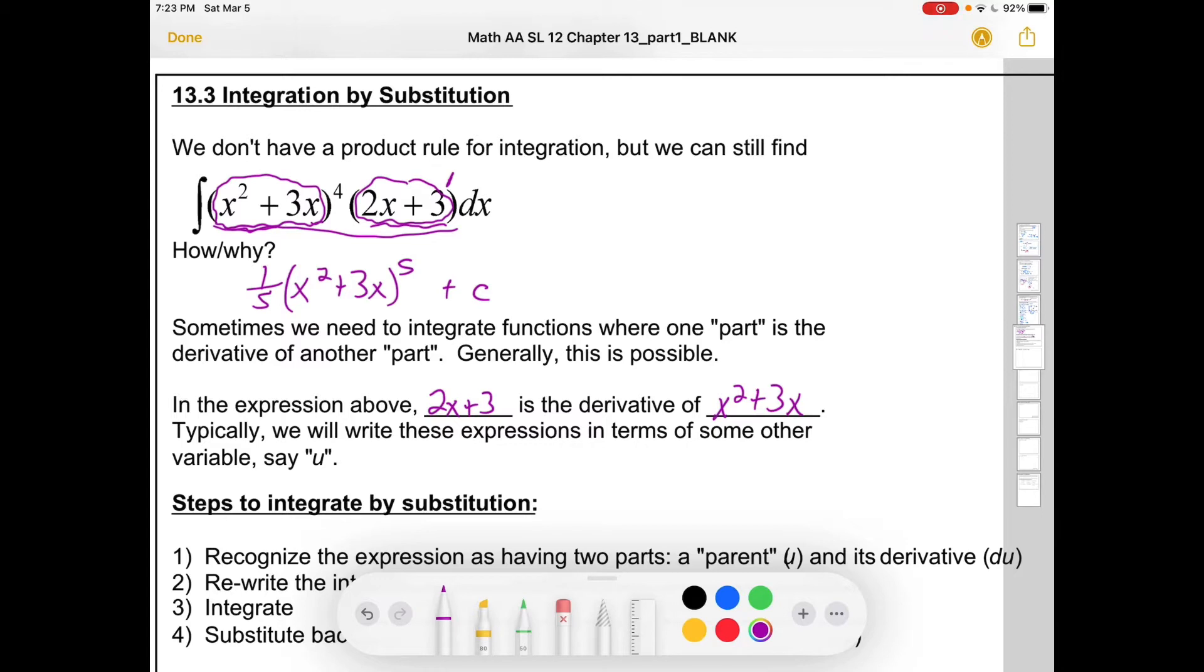One way to do this is just by inspection, and the IB will always be fine with that. If you can just see the answer and you can write down the integral, that's great. But when it is not so easy to just see it, here's our method. We're going to rewrite these expressions in terms of some other variable, and typically that variable is u that tends to be used, so we call it a u substitution.